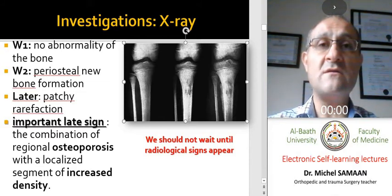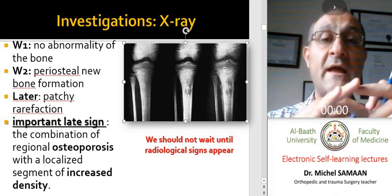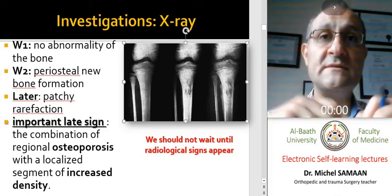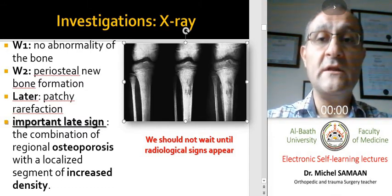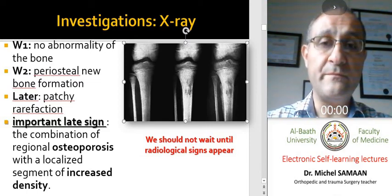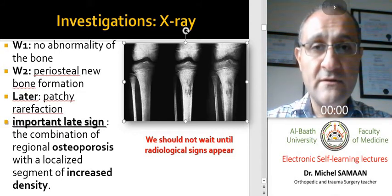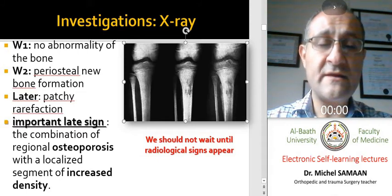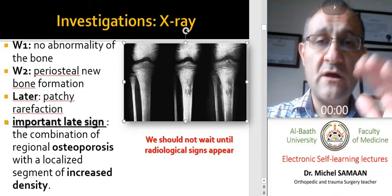The radiological findings are either periosteal reaction, as mentioned previously, and the porotic appearance of bones and what we call patchy rarefaction because of the hyperemia that happens in the bone. On this radiograph, we see local osteoporosis and the periosteal reaction — a thin density of condensation of the periosteum on the cortex.